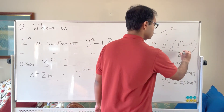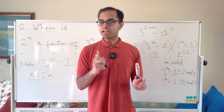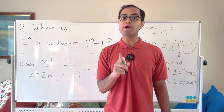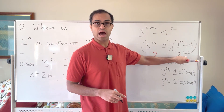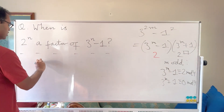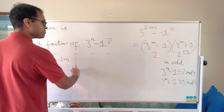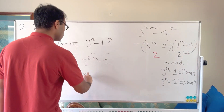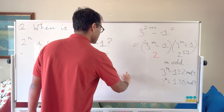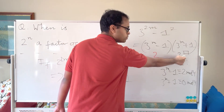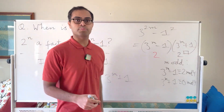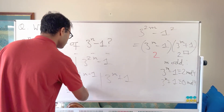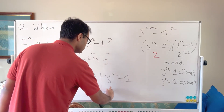For 2^(2m) to divide 3^(2m) − 1 when m is odd, since at most 2^1 divides 3^m − 1, we need 2^(2m−1) to divide 3^m + 1. This means 4^m must divide 2·(3^m + 1).